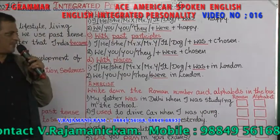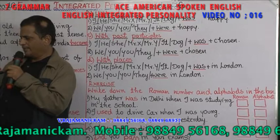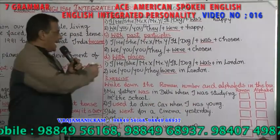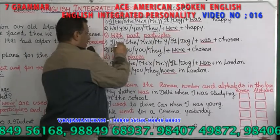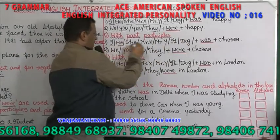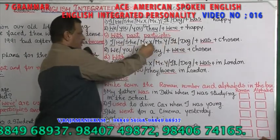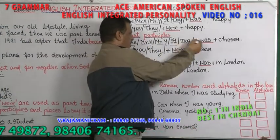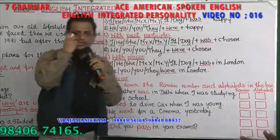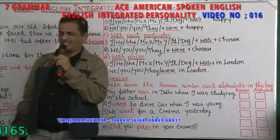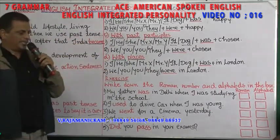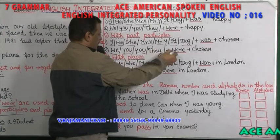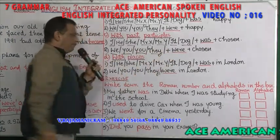With past participles — for singular: I was chosen, he was chosen, she was chosen, Mr. X was chosen, Mr. Y was chosen, it was chosen, dog was chosen. Choose, chose, chosen — past participle. For plural: we were chosen, you were chosen, they were chosen.